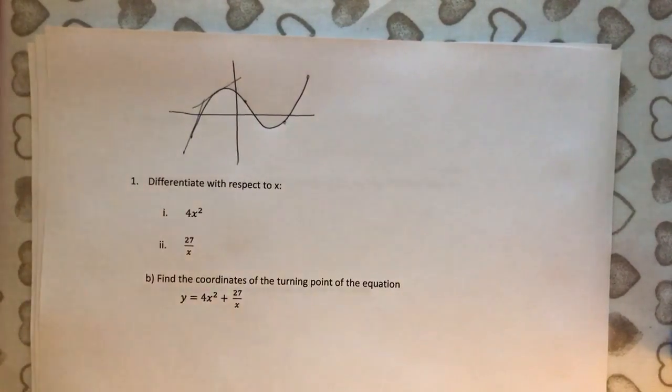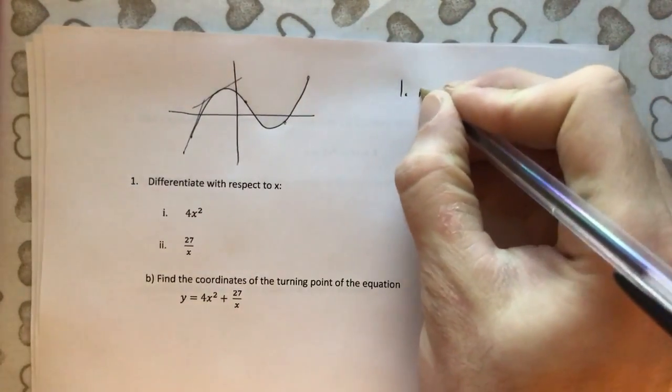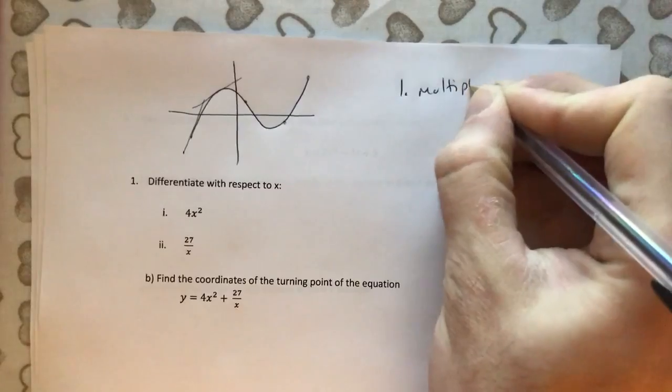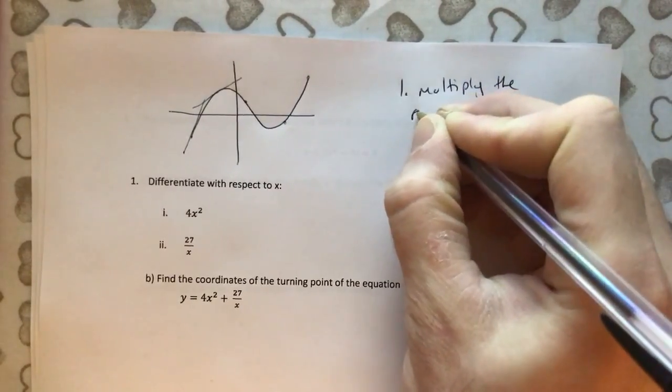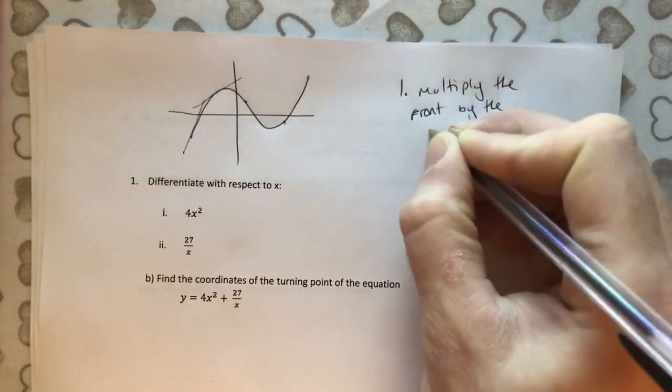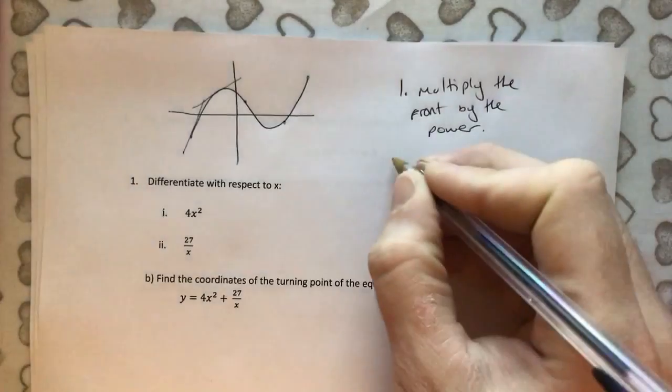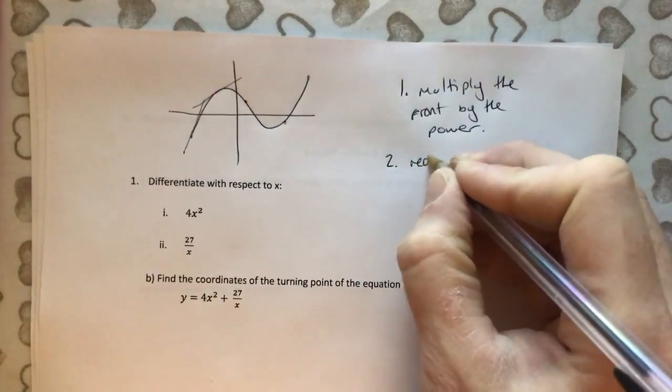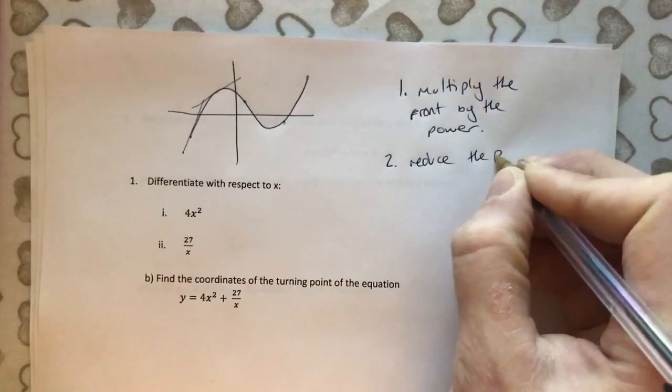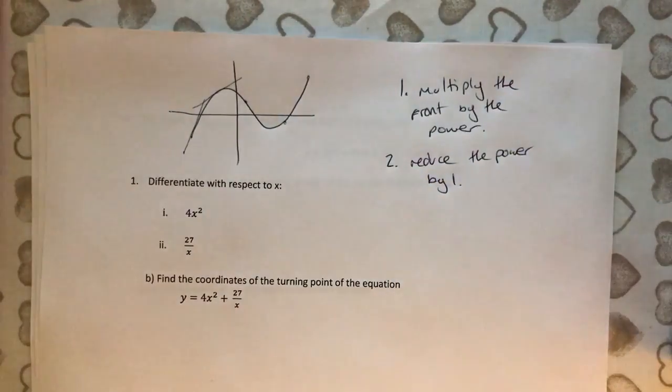And doing the differentiation is actually really simple. It's just two steps. The first step is we multiply the front by the power. And the second step is we reduce the power by one. Those are the two steps. That's all we have to do. Multiplication and then subtract one. So let's have a look.